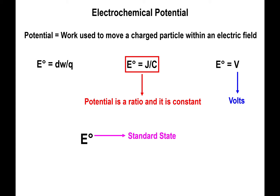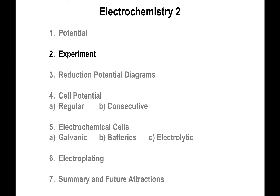The superscript 'not' represents the fact that the potential is at its standard state, meaning temperature is at 298 Kelvin, any concentrations are expected to be one molar, and any gases are expected to be at one atmosphere pressure. For instance, protons in a balanced equation are expected to be one molar, meaning pH will be zero. Typically we don't have solutions at pH zero, so the standard state may not represent the actual reaction setup, and we may need to adjust — we'll get to that later.